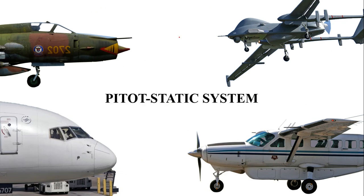Before knowing the pitot static system we need to know the location of the pitot static system or the position of the particular instrument in an aircraft. In a common airliner you can find the pitot static system in the nose region. There are two pitot static tubes positioned there which provide all the necessary readings for the aircraft. One general note is that the pitot static tube has to be placed in the forward position of the aircraft as it needs fresh, undisturbed air.